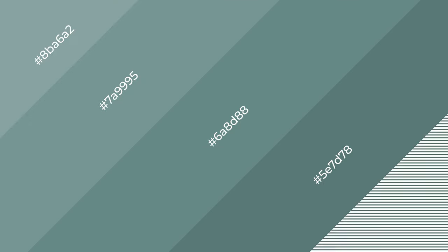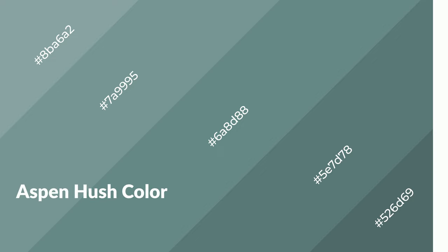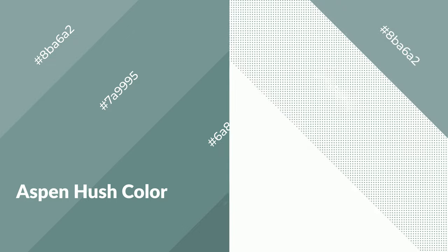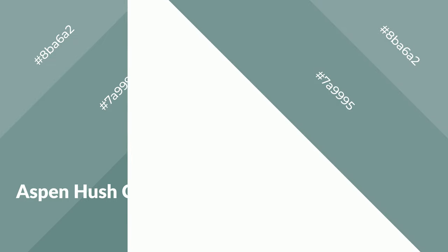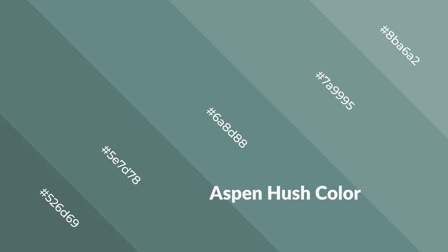Aspen Hush is a cool color and it emits calming, serene, soothing, refreshing, spacious, unwinding, peaceful, and relaxed emotions. Cool colors are like water, ice, sky, grass, soft, and snow. You can see them used in baby products.